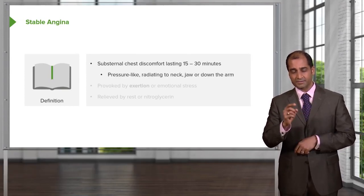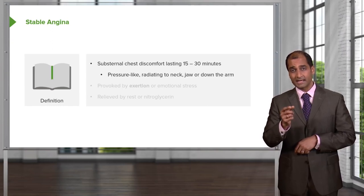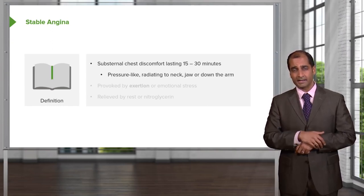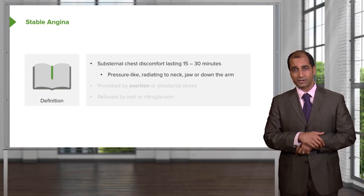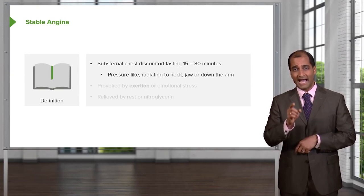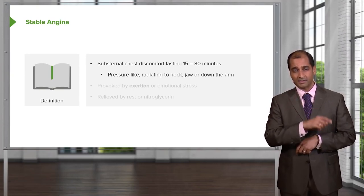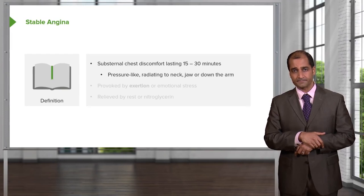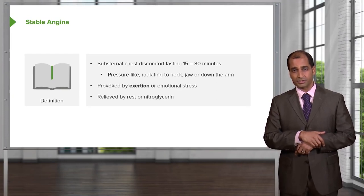When there's exertion, understand this chest pain may then behave like the patient's having an MI. This may then radiate up into the neck, jaw, and so on and so forth. Only at exercise exertion — provoked by exertion, relieved by rest.